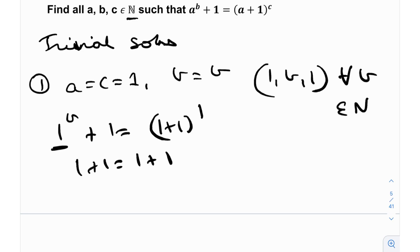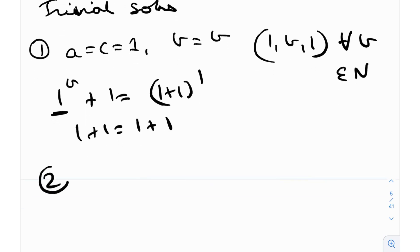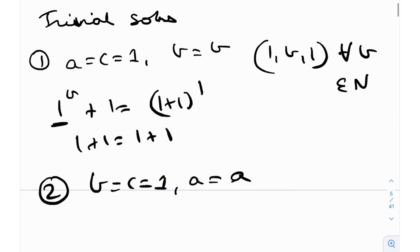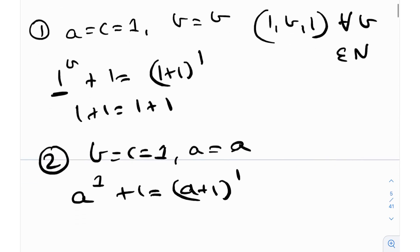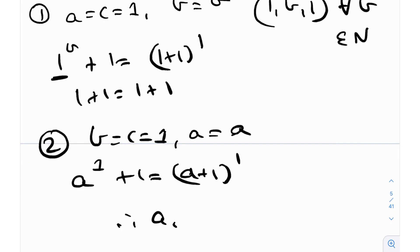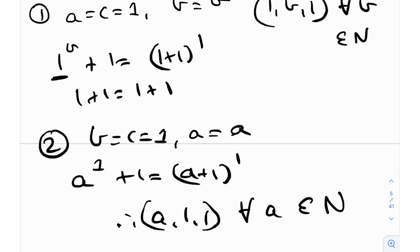The second family of solutions: if b=c=1 and a is anything, then a^1 + 1 = (a+1)^1, which is simply a+1. So (a, 1, 1) is also a solution for all a belonging to natural numbers. These are the two families of trivial solutions — an infinite number of solutions over the infinite natural numbers.